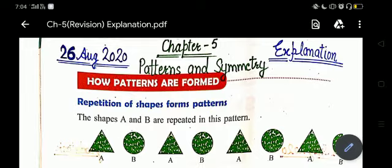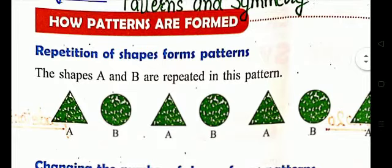These are shape patterns. Firstly, repetition of shapes forms a pattern. You can see shapes A and B — shape A is a triangle and B is a circle. So you can see repetition of shapes: triangle, circle, triangle, circle, triangle, circle. This is one pattern.